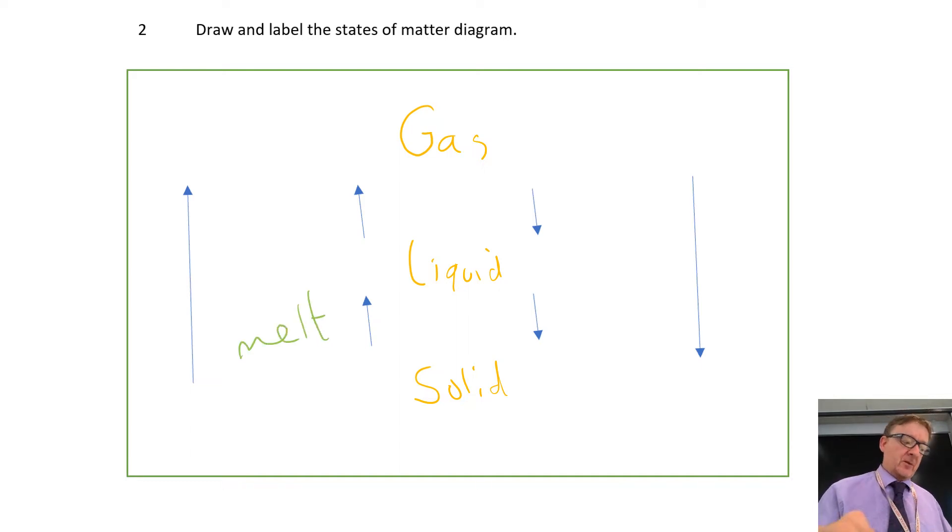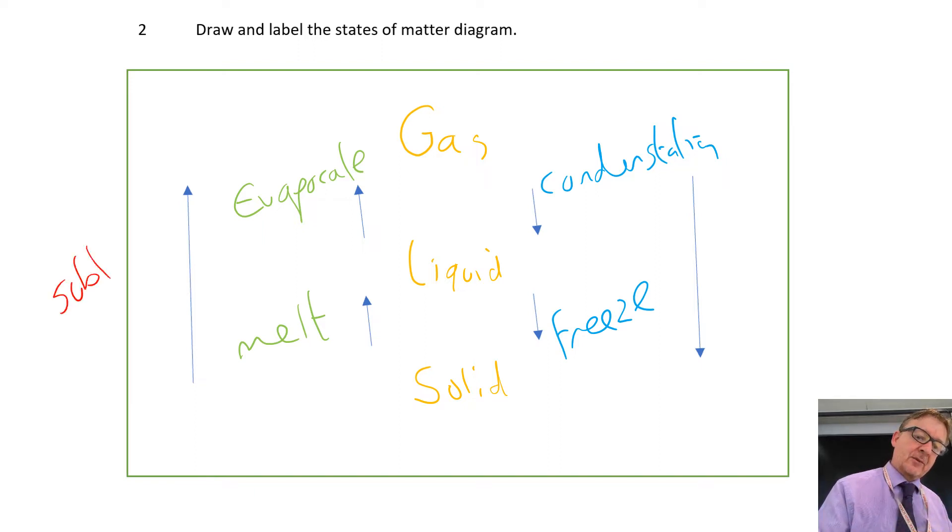Going from a liquid to a gas, evaporate. Then going from a gas to a liquid, condensation. Going from a liquid to a solid, freeze. And then the last ones on here, right, are the ones where it goes solid straight to a gas. Is sublimation. Sublimation. And going from a gas straight to a solid is deposition. Right, deposit. So it's basically a gas being deposited onto a desk or whatever it is, which is then deposition.